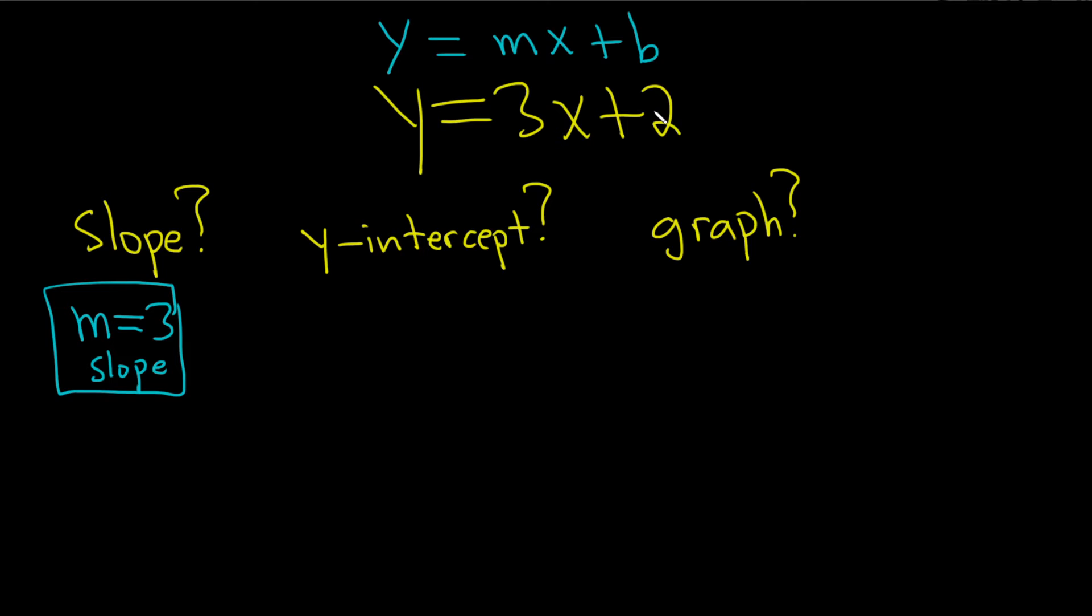B is the y-intercept. So the y-intercept is equal to 2. Now it's probably better to write this as an ordered pair. The way to memorize it is it's the y-intercept, so y is equal to 2. So because y is 2, the x must be 0. So that would be the y-intercept.